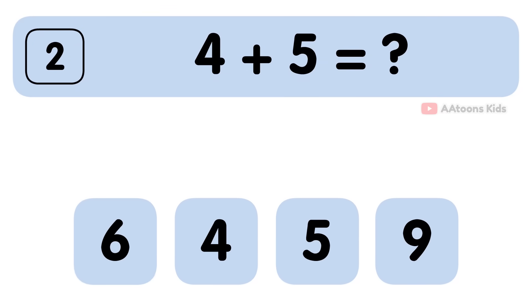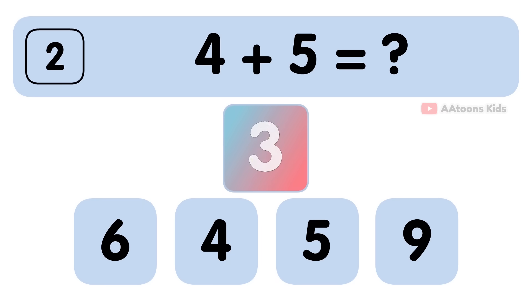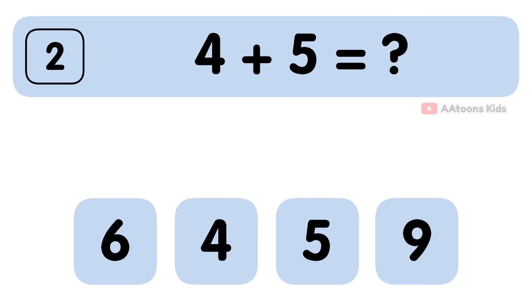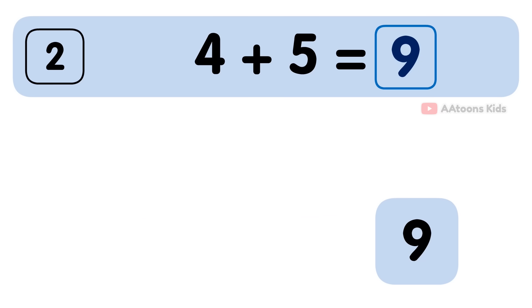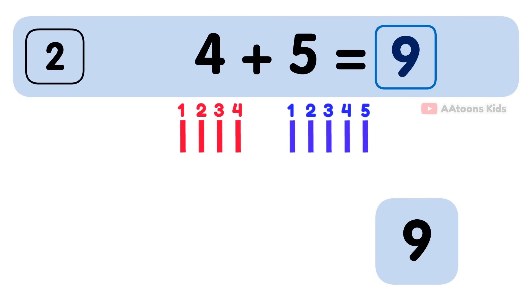4 plus 5 is equal to 9. Let's add the numbers 4 and 5. Now count together: 1, 2, 3, 4, 5, 6, 7, 8, 9. So the answer to 4 plus 5 is 9.